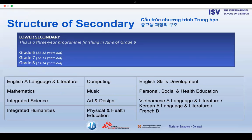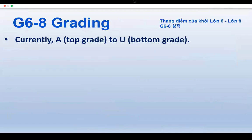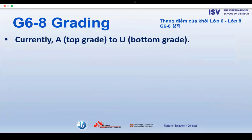Let's look at each area of the secondary school, starting with the structure of lower secondary. This encompasses grades six through to eight with the subjects that students take. Currently, all assessment in lower secondary is done internally. We use a letter system where A is the top grade and U is the bottom grade.